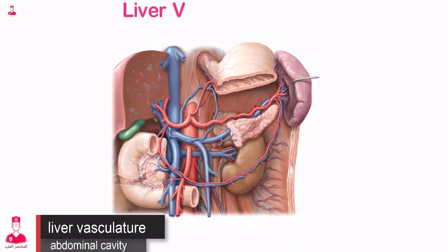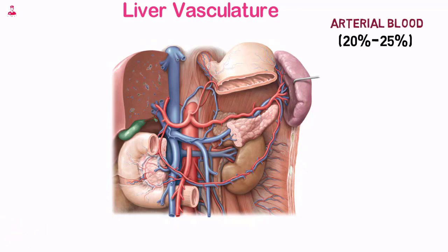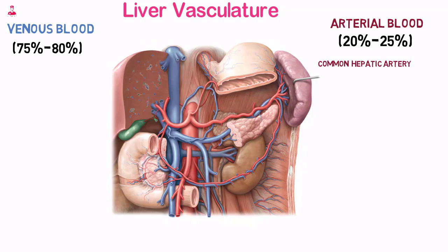The liver is unusual in that it has a dual blood supply, receiving arterial blood from the common hepatic artery and nutrient-rich venous blood from the portal vein.